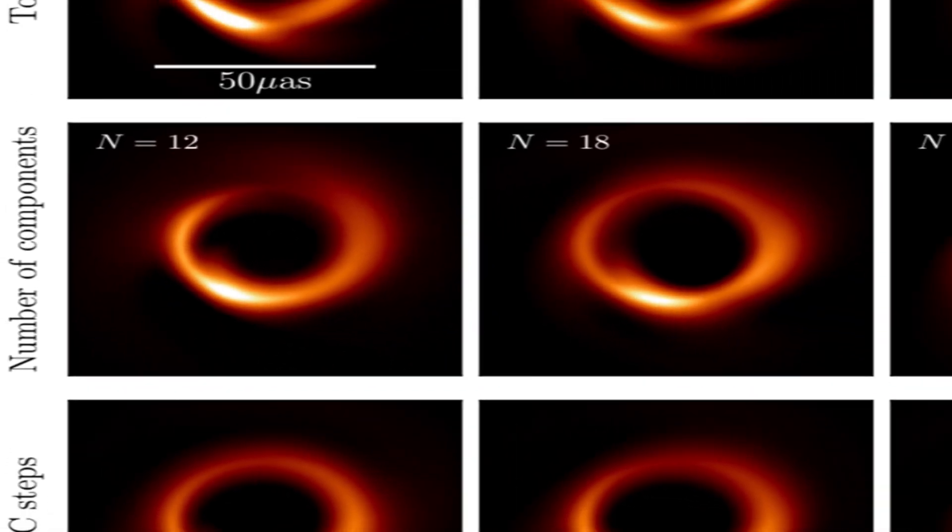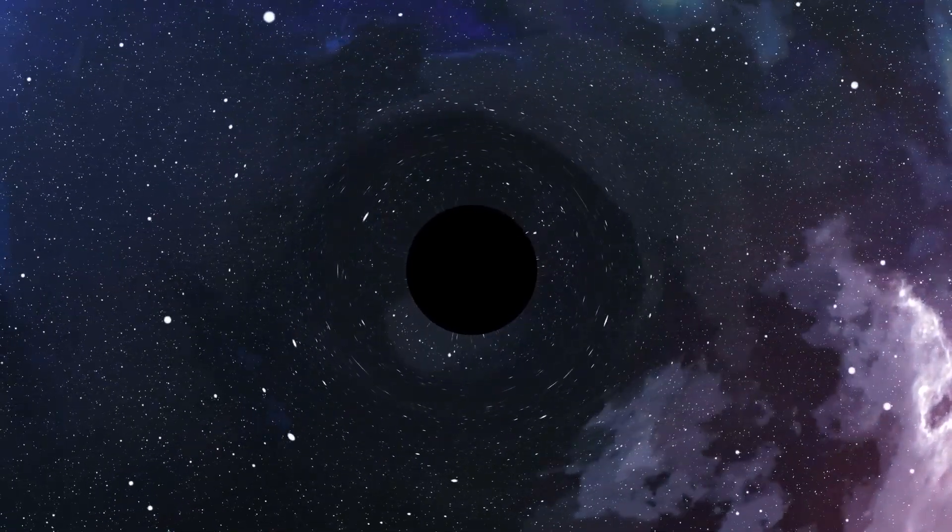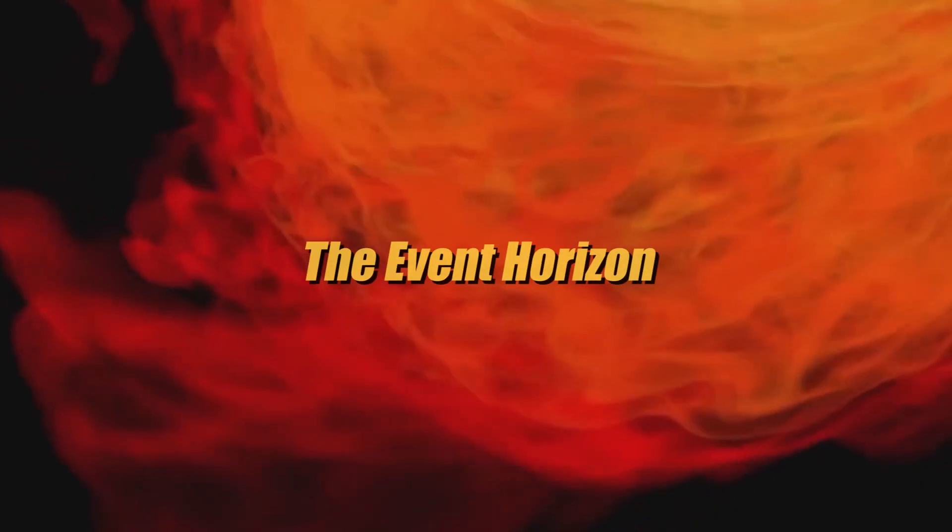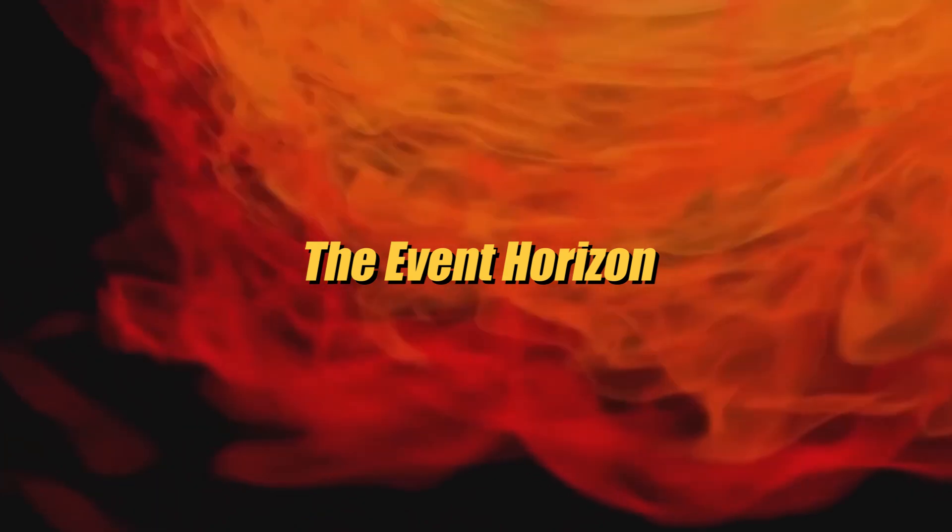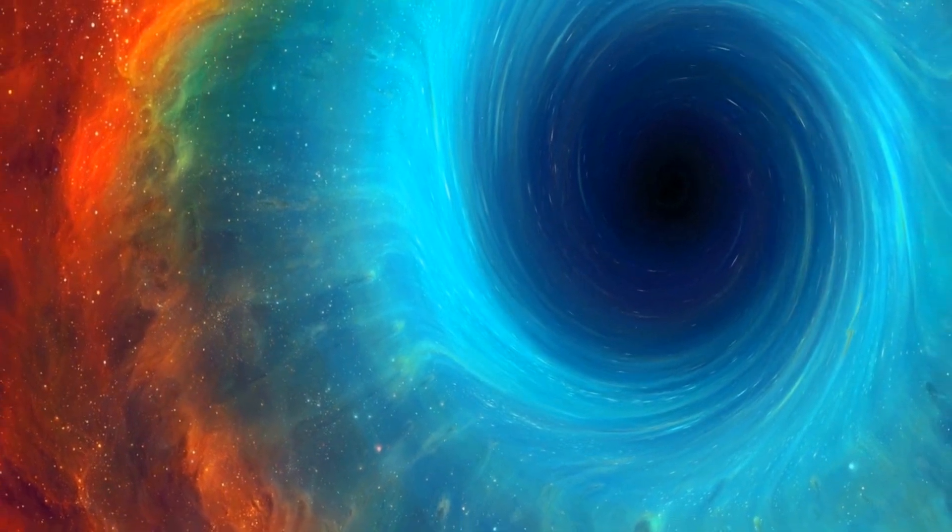In reality, they are much more complex. To reach the empty part of a black hole, three previous layers must be traversed. The first layer is known as the event horizon, which is the point of no return. Once the event horizon is crossed, there is no turning back.